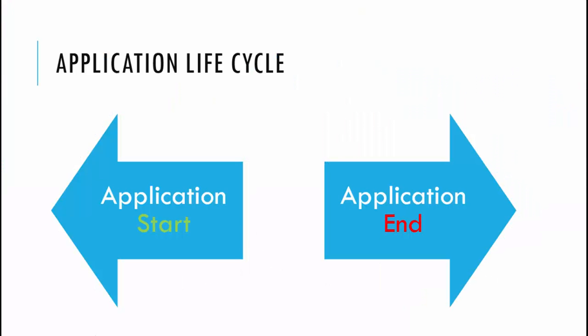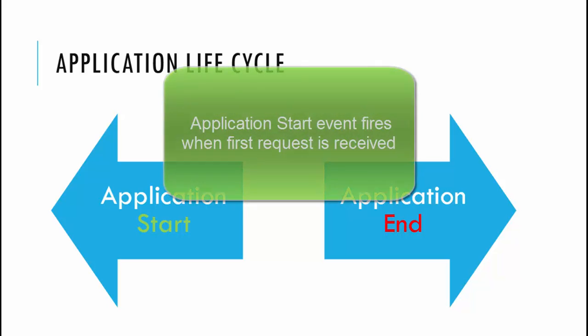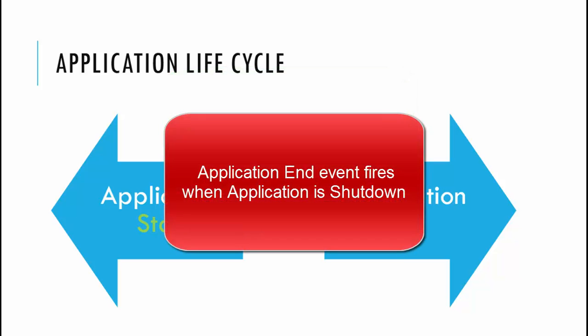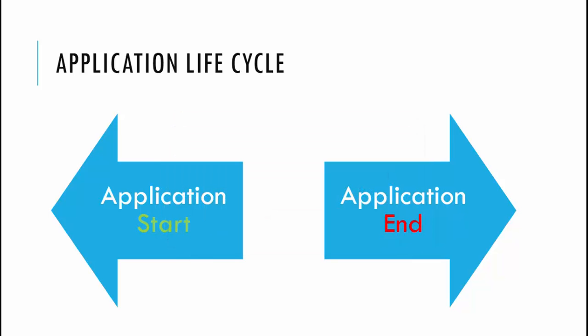In an ASP.NET MVC application, the lifecycle contains two application level events associated with the start and end of the application. The application start event fires when the application is brought to life for the very first request. The application end event is fired when the application has been shut down. It is important to understand these lifecycle events to get a better understanding of how the MVC lifecycle starts.